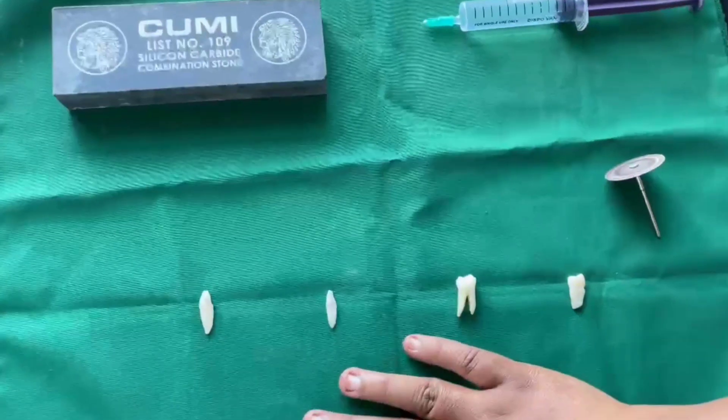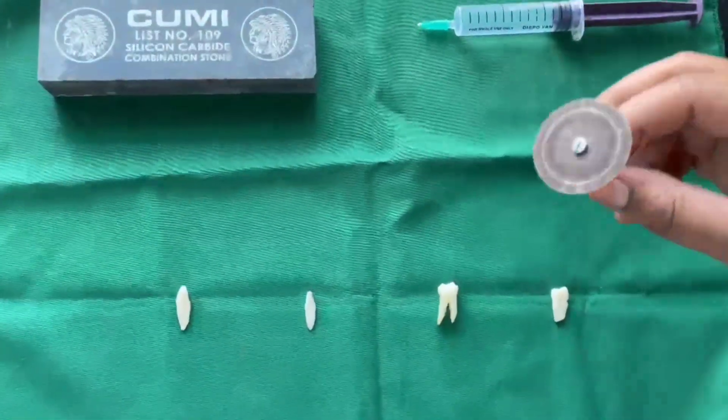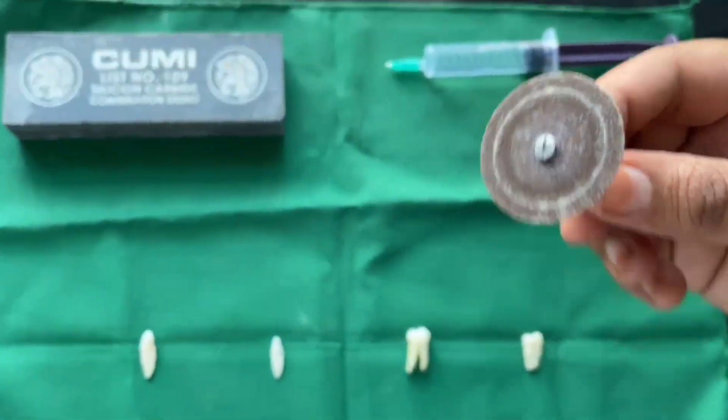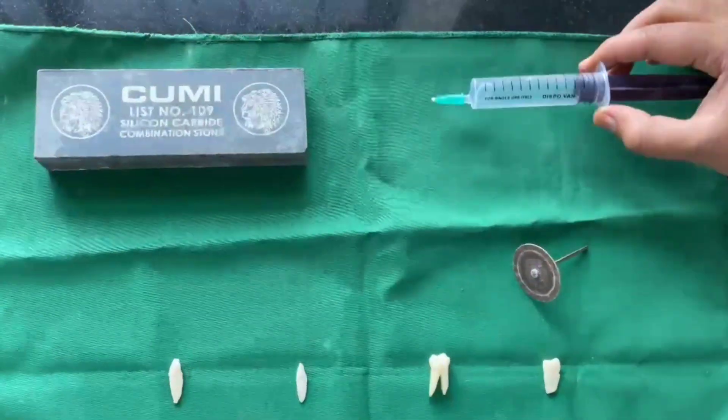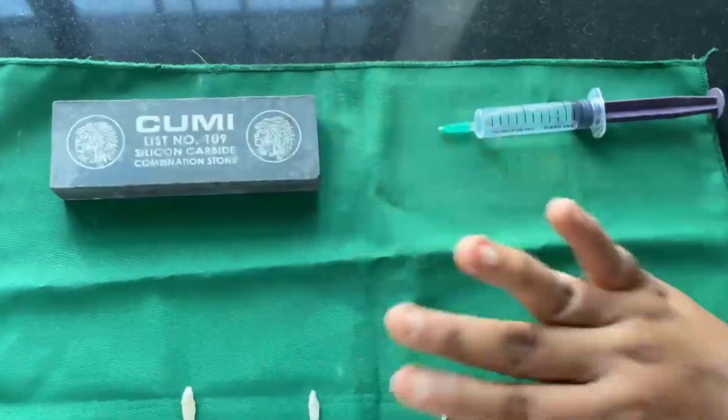The armamentarium includes extracted tooth, carborundum disc, irrigation syringe, and an Arkansas stone.